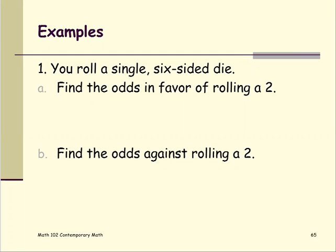For this example, you roll a single six-sided die and we're going to find the odds in favor of rolling a 2.